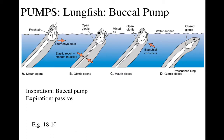Then the animal closes its mouth and constricts the branchial muscles or buccal cavity, forcing air down into the lungs — a mix of fresh and expired air. The lung is then pressurized and absorbing oxygen. The next time the animal comes up again, elastic recoil causes expiration, preceded by expansion of the buccal cavity to draw the air in.